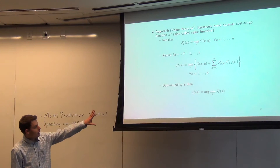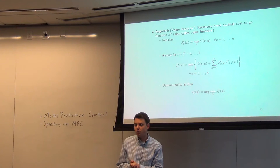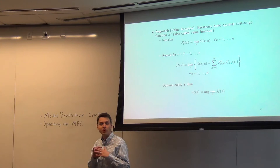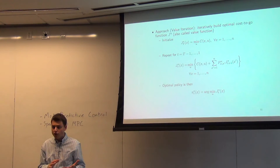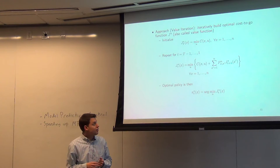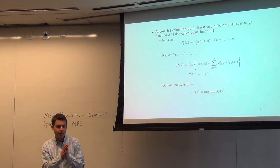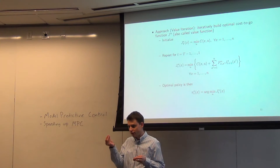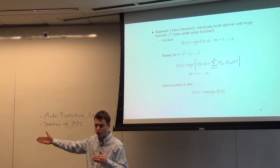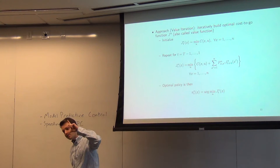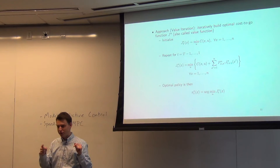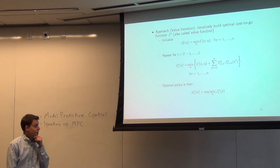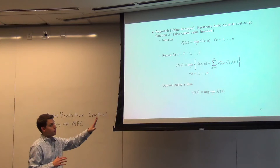Last time I ended with talking about MDPs and value iteration. Value iteration is how we compute the optimal policy in an MDP, taking into account all the noise and stochasticity of the dynamics. It builds this thing called the optimal value function, which is a measure of how much cost you'll incur if you act optimally at time t and keep acting optimally from that time forward, building it up through dynamic programming.